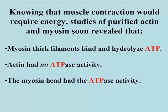Actin, on the other hand, had no such ATP hydrolyzing activity. So it looked like the myosin would be the site of ATP hydrolysis that would power contraction. The S1 fraction of the myosin monomer — the myosin heads — were the site of the ATP binding and hydrolysis.